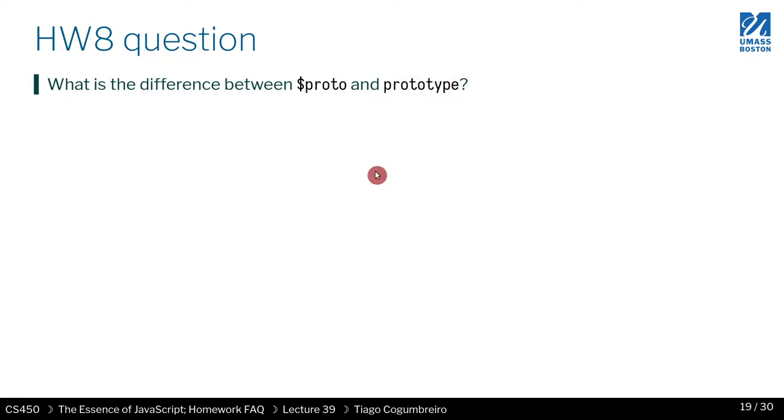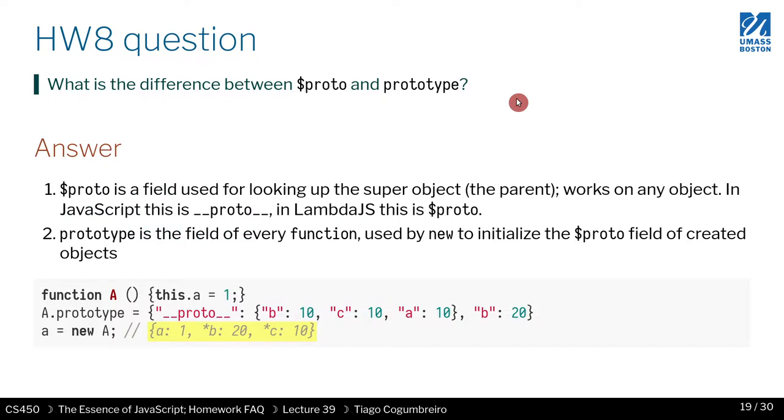Another question you may be wondering is what is the difference between dollar-proto and prototype? Dollar sign proto is lambda-js representation of underscore underscore proto javascript. So in javascript it's underscore underscore proto and in lambda js they use dollar sign proto for some reason. Prototype is that special field in a function that is used as the default template. So whenever you create an instance of a class, its proto is going to be whatever is pointed to by dot prototype. So you can define the prototype of the instance automatically without manipulating the underscore underscore proto directly. That's the objective. Okay, that's about it.